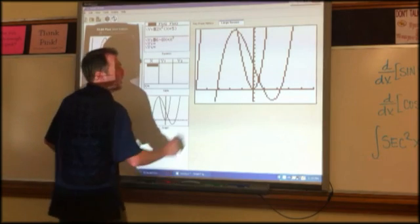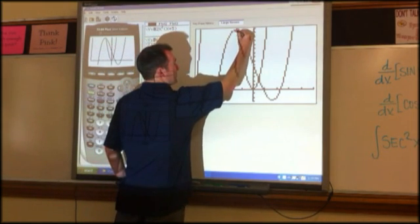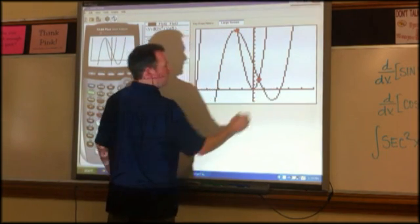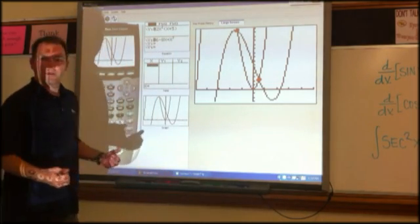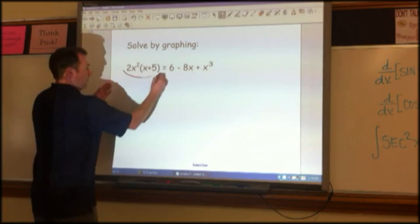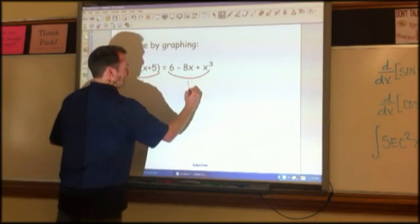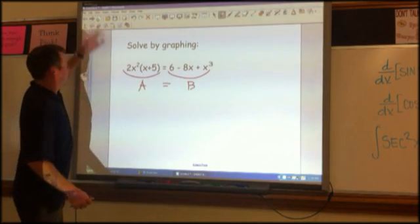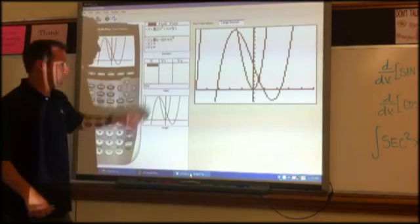I can see here I've got two solutions to this. These two points, one right here and one right here, that's where both of these graphs are equal to each other. And that's what our original question said. Where is A equal to B? And so I'm just trying to look at that graphically.